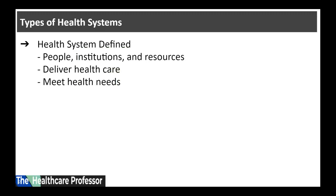Let's start by defining what we mean by health system. A health system is the organization of people, institutions, and resources that deliver health care to meet the health needs of certain populations or target populations. You can also call it a health care system.